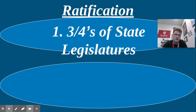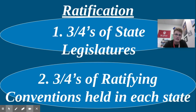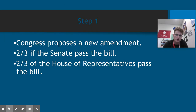Ratification also has two methods. State legislatures — like Indiana's State Senate and House of Representatives — can both vote yes to ratify. However, you need 38 states, which is three-fourths of 50 states, to say yes. Alternatively, 38 states can hold ratifying conventions, which can take different forms: a popular vote or a convention where counties send delegates. If they vote yes, that state ratifies it, and once 38 states have ratified, the amendment is adopted.